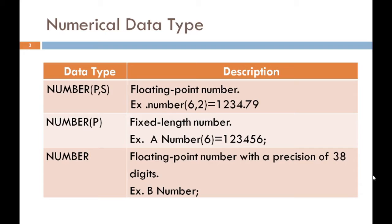Let's see one example. A number with precision 6 and scale 2 — the number 1234.79 has a precision of 6 and a scale of 2. So to store this number, we need the NUMBER data type with precision 6 and scale 2. Both precision and scale are in decimal digits and they are optional. If you skip the precision and scale, Oracle uses the maximum range and precision for the number.